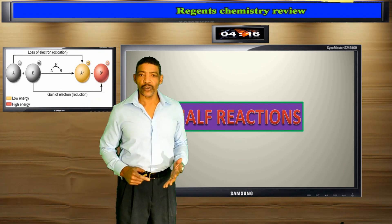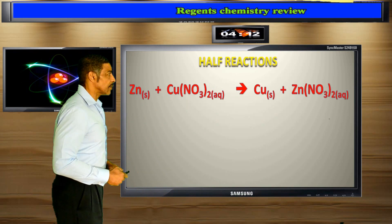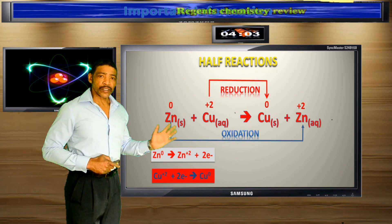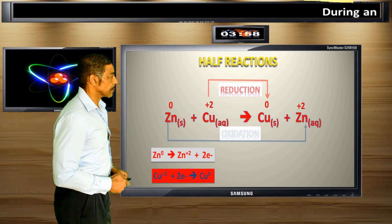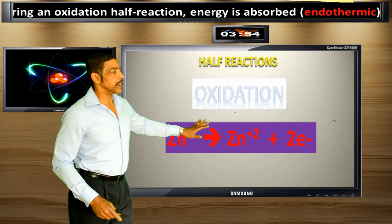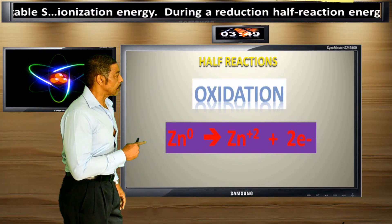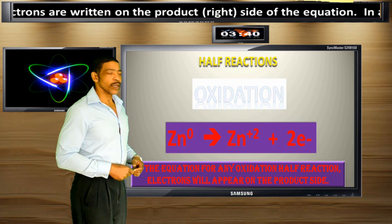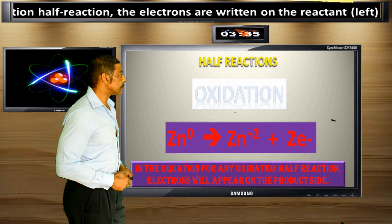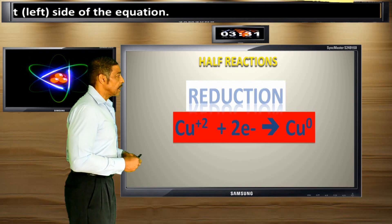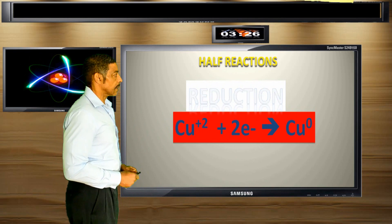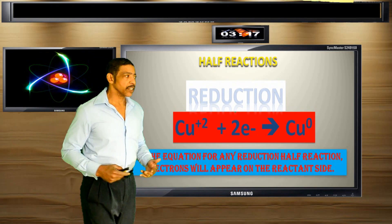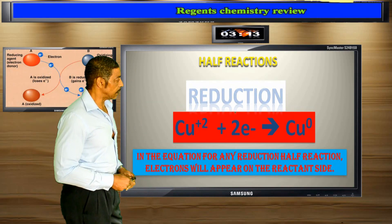Oxidation reduction reactions are extremely useful because they may be separated into half-reactions. Let's go back to the reaction between zinc metal and aqueous copper 2 nitrate. This reaction involves an oxidation half-reaction and a complementary reduction half-reaction. During the oxidation half-reaction, two electrons are lost by an atom of zinc and are written on the product side of the equation. In the equation for any oxidation half-reaction, the electrons will always appear on the product side. During the reduction half-reaction, two electrons are gained by the copper 2 cation and are written on the reactant side of the equation. So in any reduction half-reaction, the electrons will always appear on the reactant side.